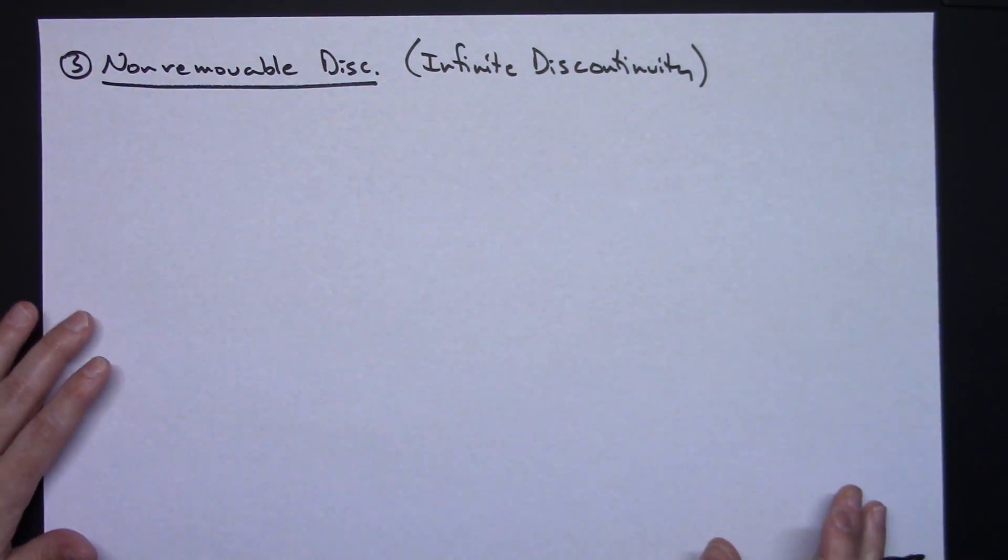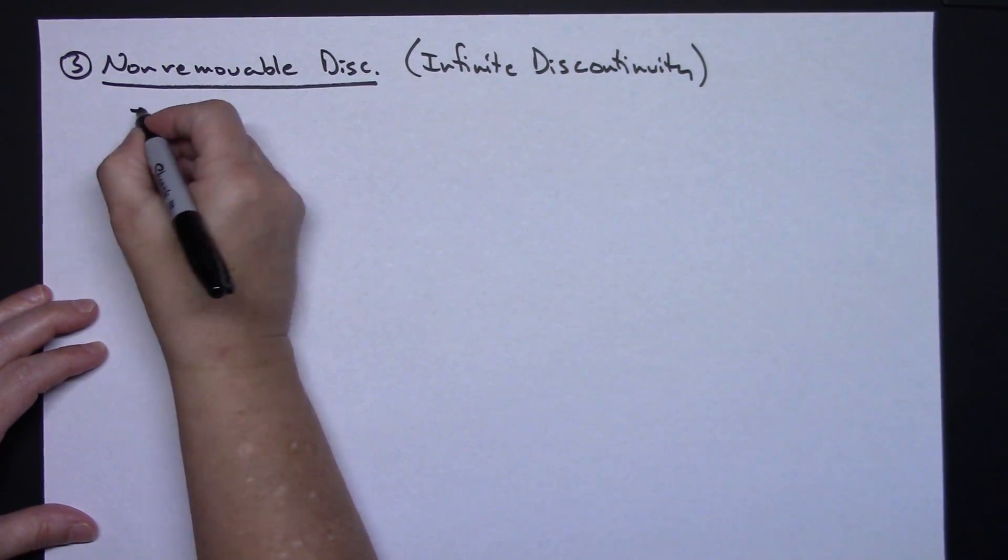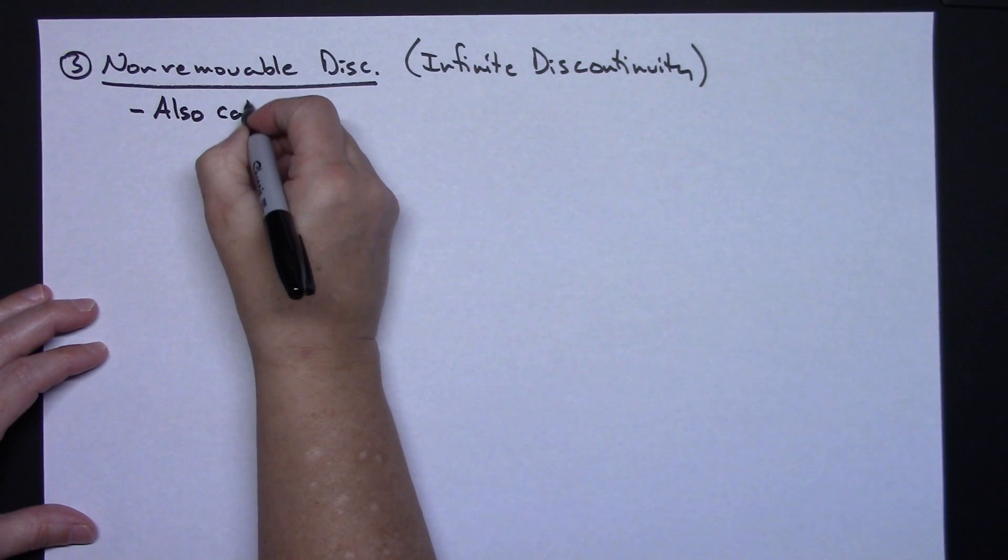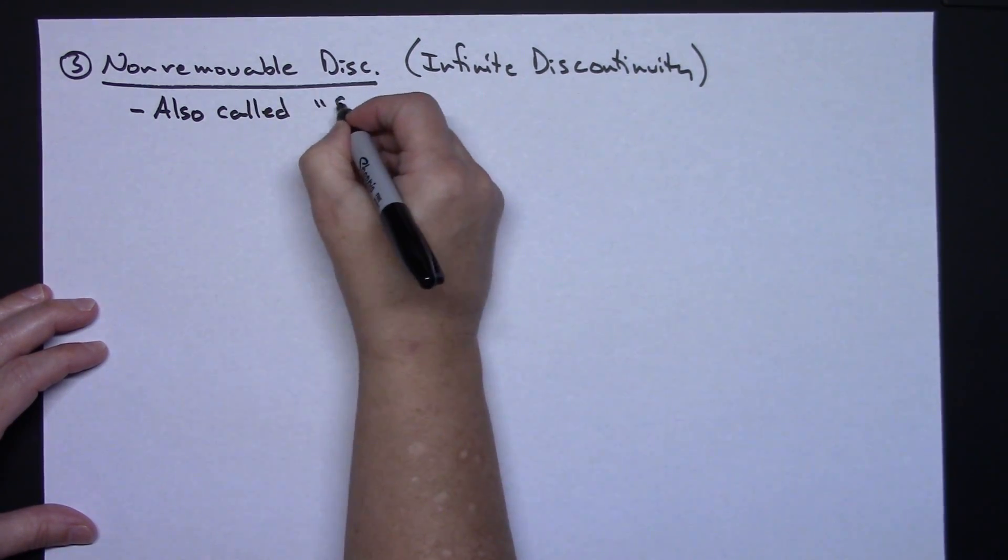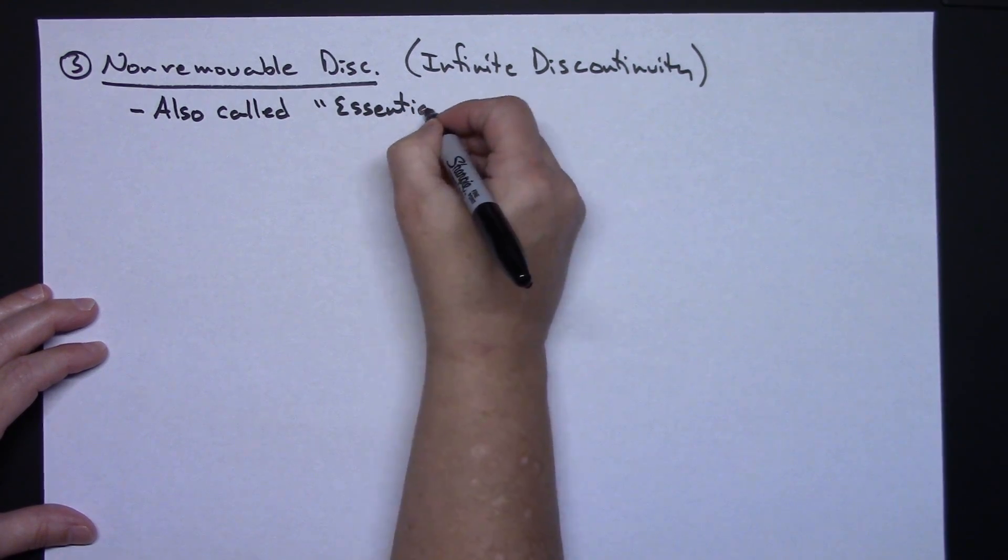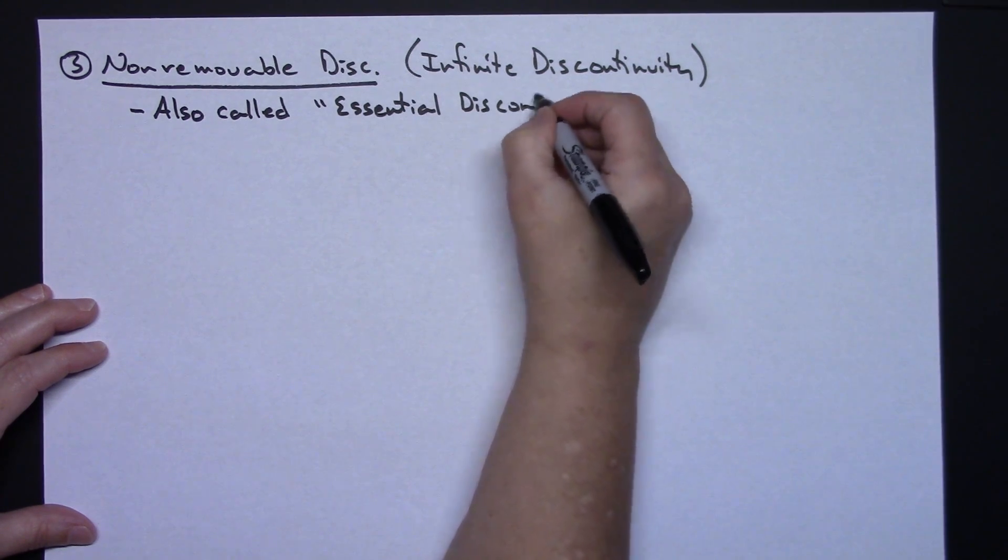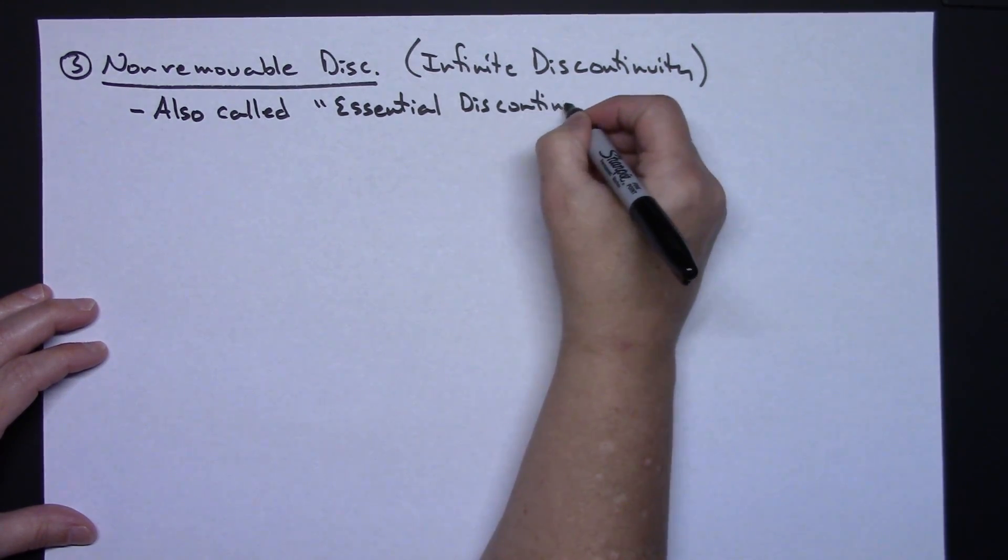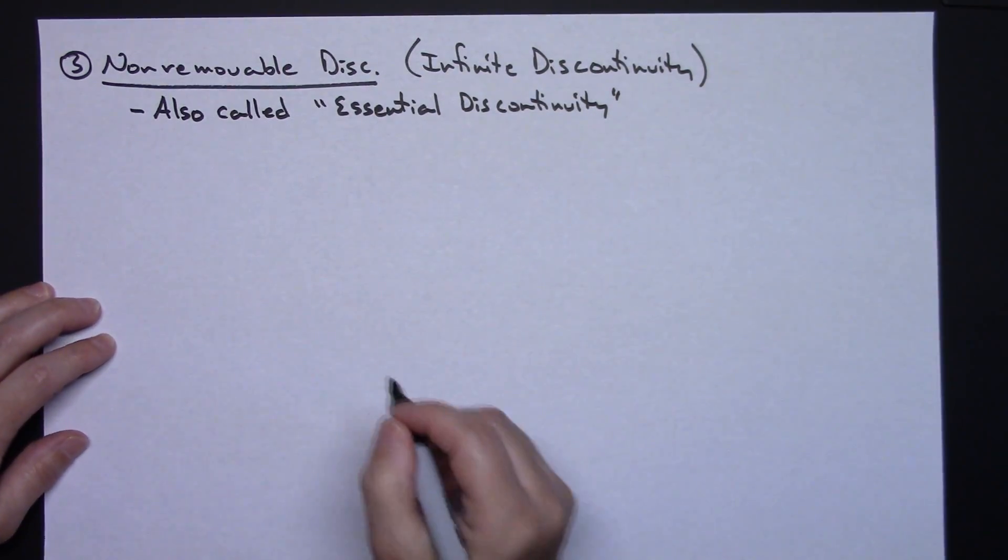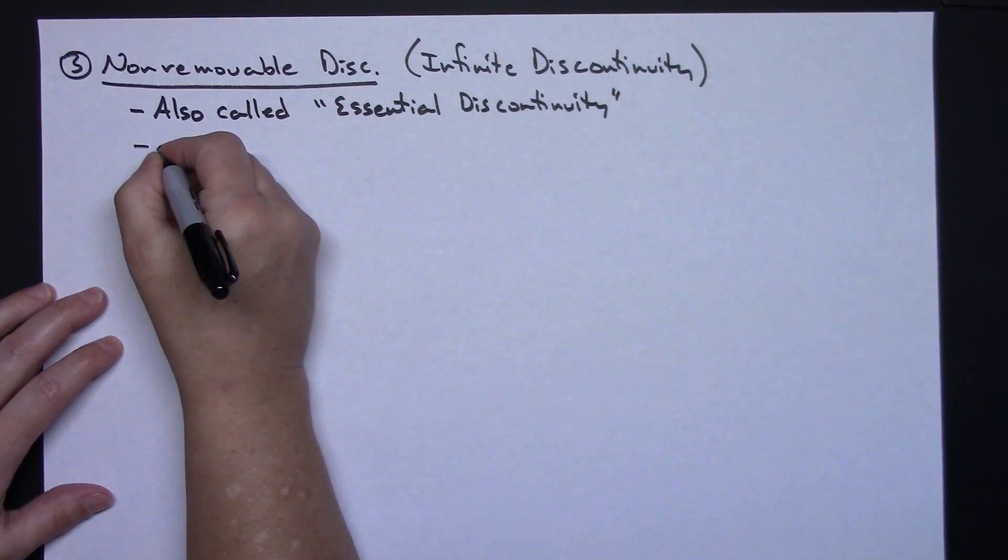It can also be called an essential discontinuity, so it's also called essential discontinuity. So it depends on your textbook and what you're reading and what your professor uses more commonly, but that is another name for it. And on an infinite discontinuity, you've got a couple of scenarios that can occur.